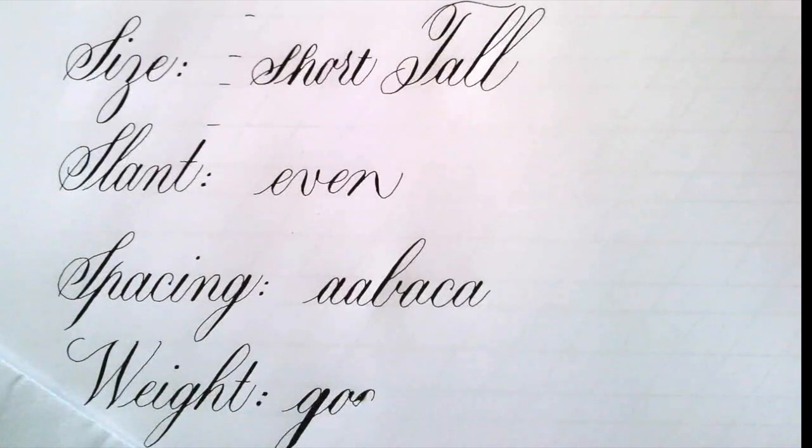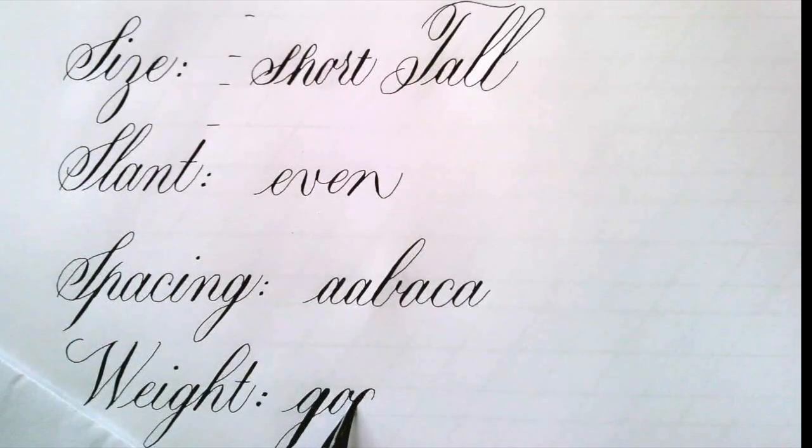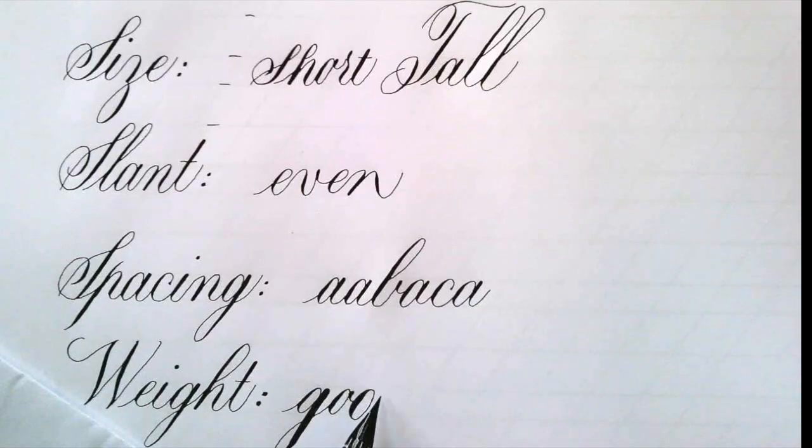Otherwise, you get an example like this one that I'm writing right now, where the downstroke of the G is much heavier than the downstroke of that first O, or the downstroke of that D, for example.